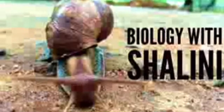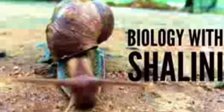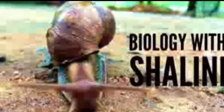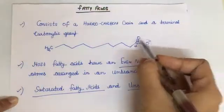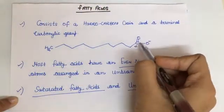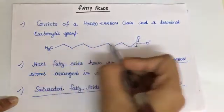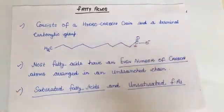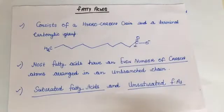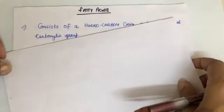Hello everyone, welcome to another tutorial from Biology with Shalini. In this video I'm going to talk about fatty acids. Fatty acids are basically made up of a hydrocarbon chain and they have a terminal carboxylic group. This is the carboxylic group and this is the hydrocarbon chain.